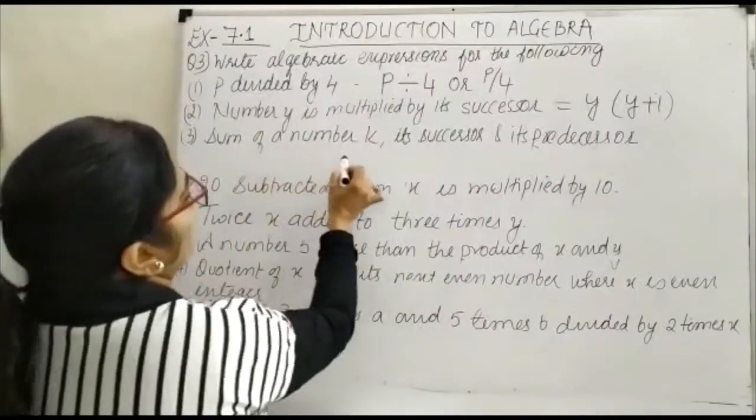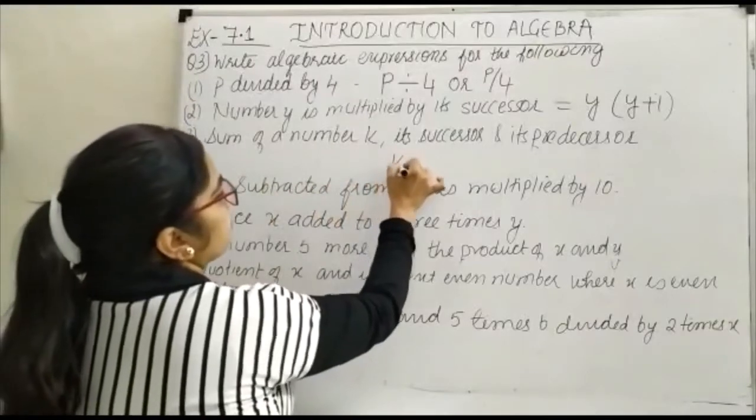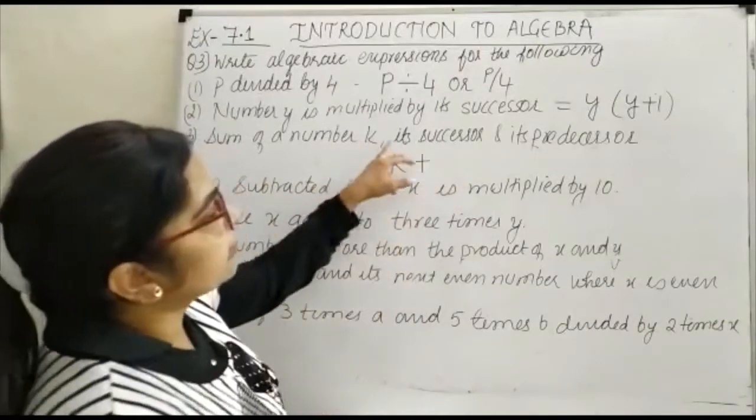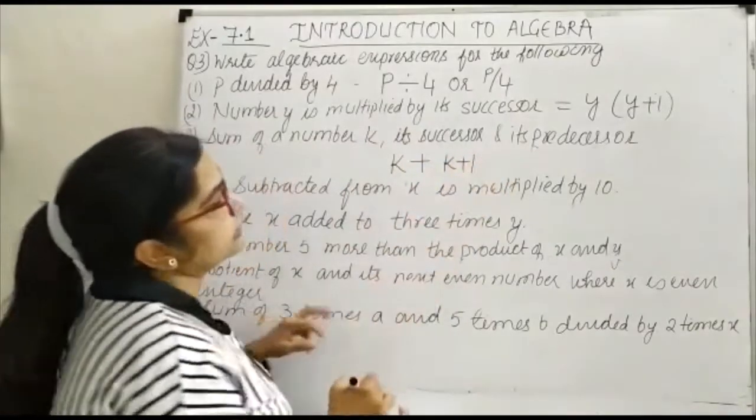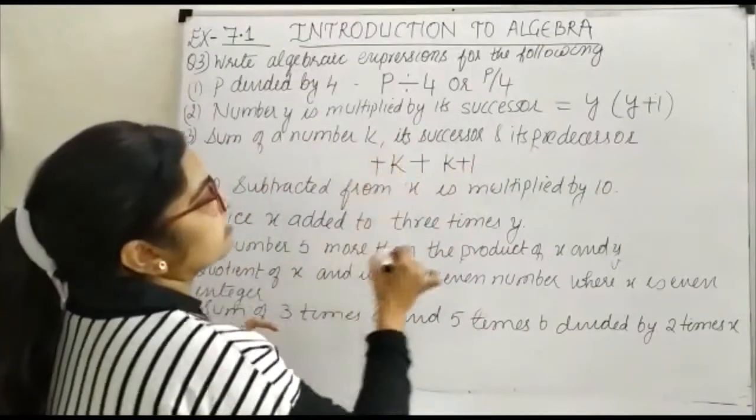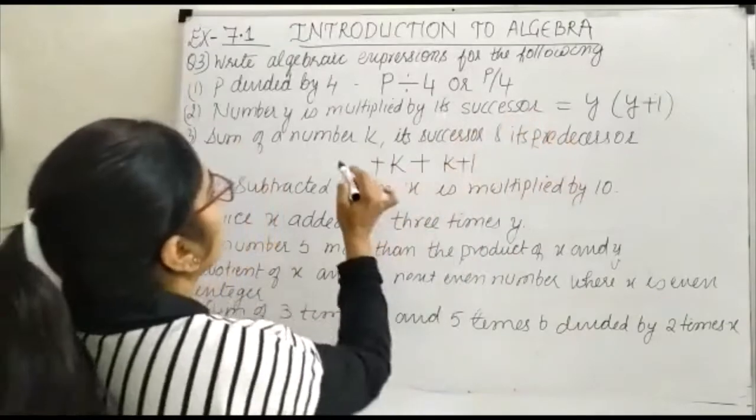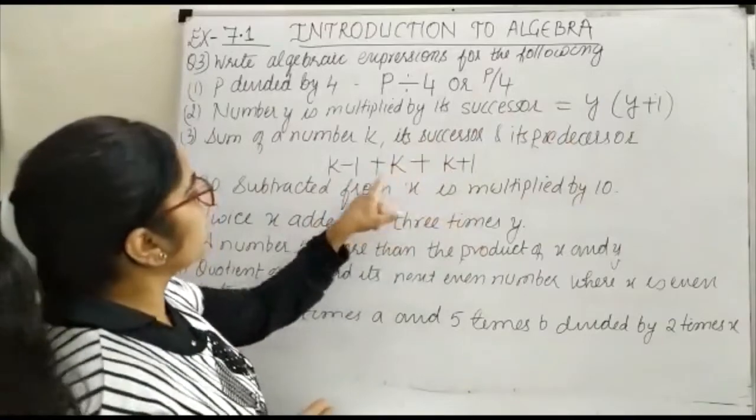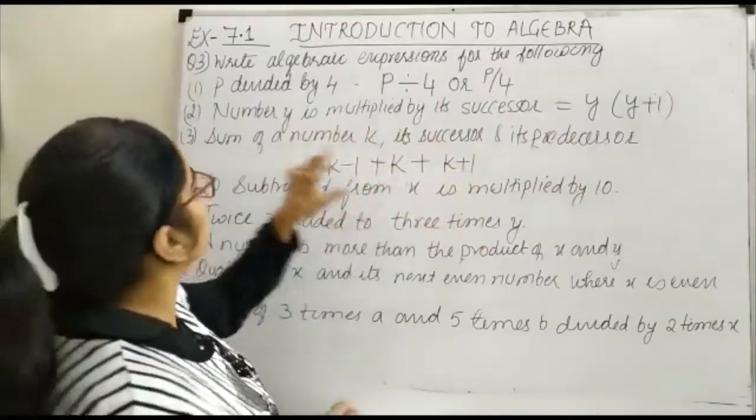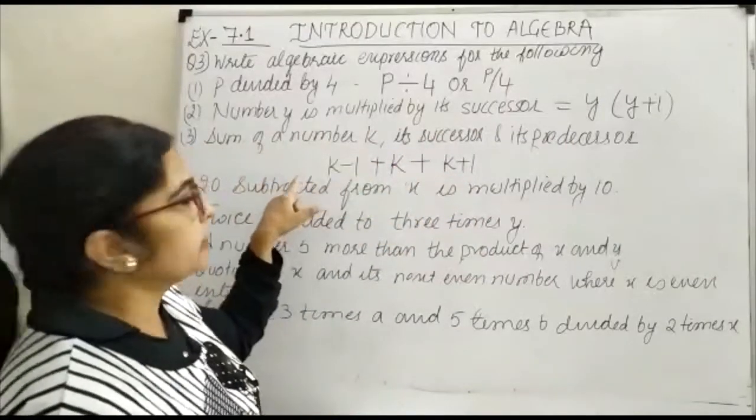Third is sum of a number K and its predecessor, which is K minus 1. So this will be K plus (K minus 1). Then you will add these terms.